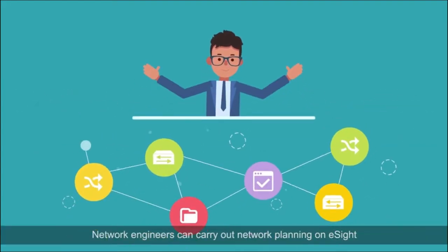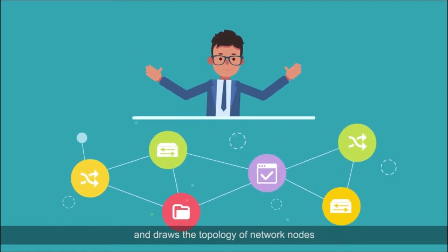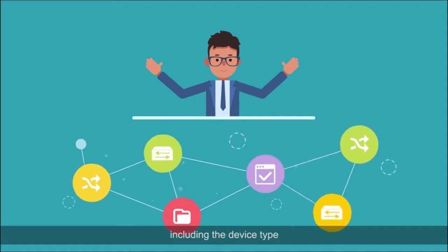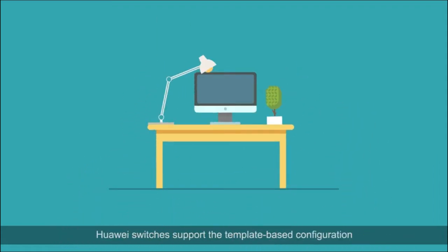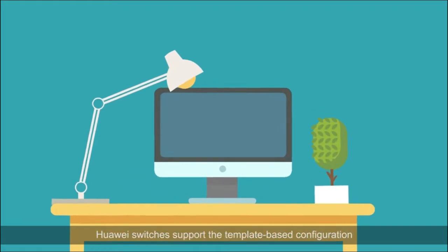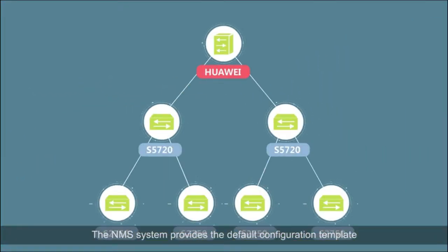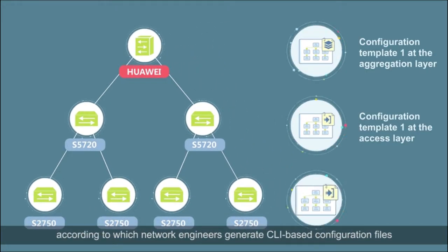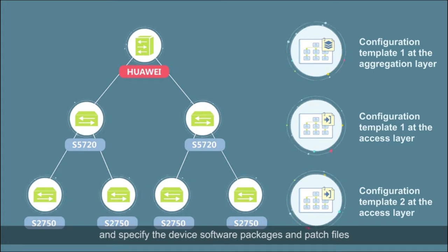Network engineers can carry out network planning on eSight and draw the topology of network nodes, including the device type and planning of links and names. Huawei switches support template-based configuration. The NMS system provides the default configuration template, according to which network engineers generate CLI-based configuration files and specify the device software packages and patch files.